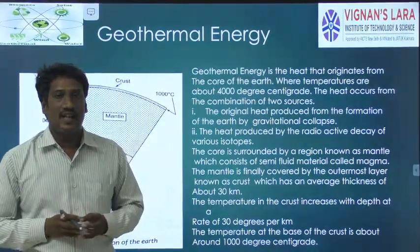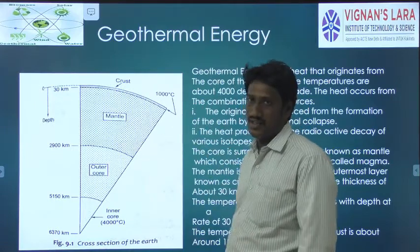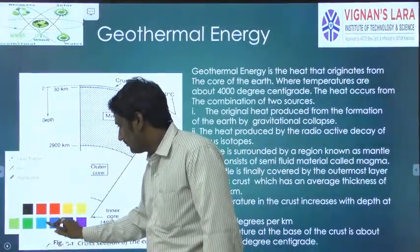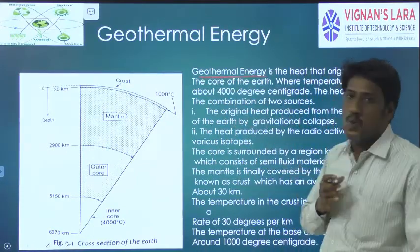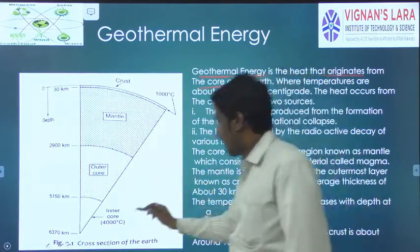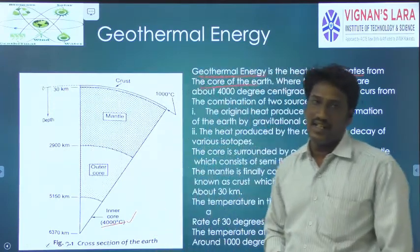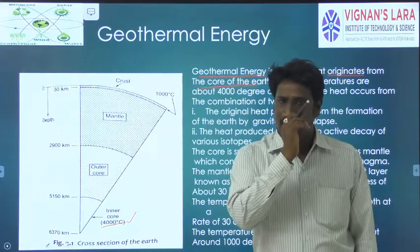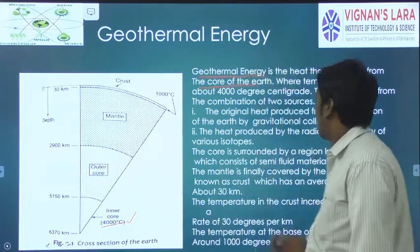We can observe the cross-section diagram of the earth. Geothermal energy is the heat that originates from the core of the earth. The core of the earth has a temperature of around 4000 degrees centigrade. The thermal and heat energy that is stored inside the earth is called geothermal energy.